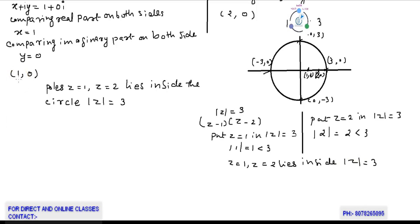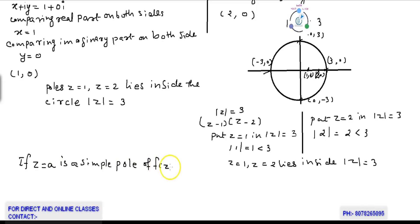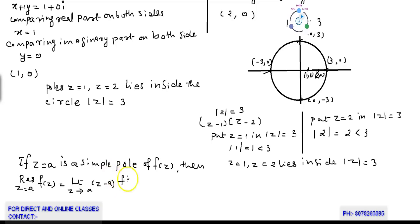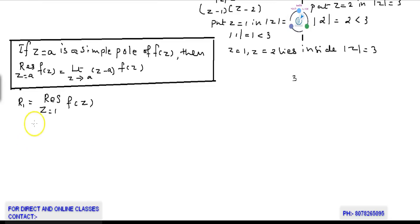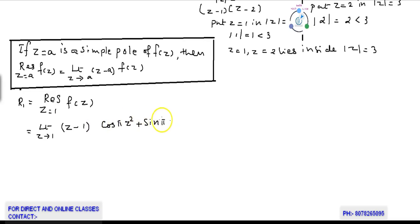To solve this question, we have to find the residues at z = 1 and z = 2. By Cauchy's residue formula, if z = a is a simple pole of f, then Res(f, a) = lim(z→a) (z−a)·f(z). Here f(z) = (cos πz² + sin πz²) / ((z−1)(z−2)).